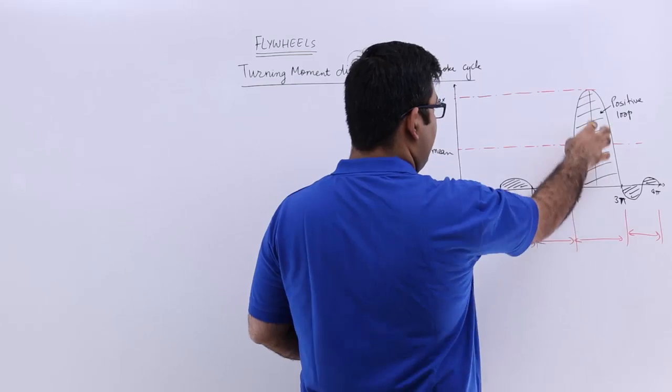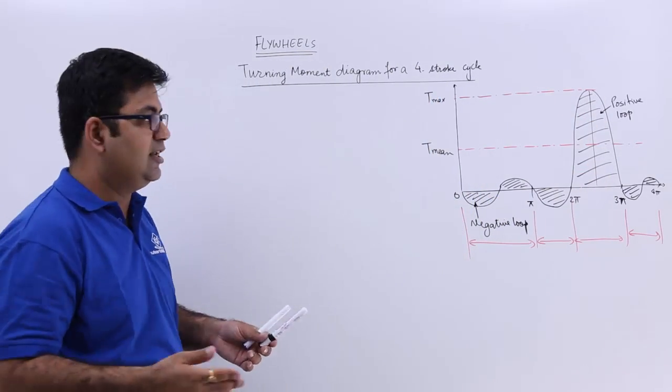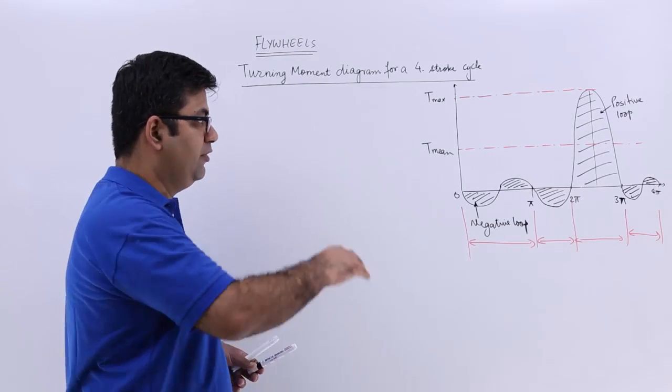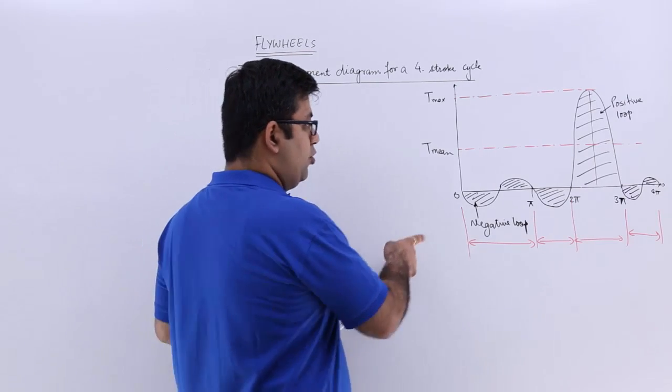You can see this shaded area represents the energy. The energy keeps on fluctuating; there is no constant energy in the engine or in the four-stroke cycle.